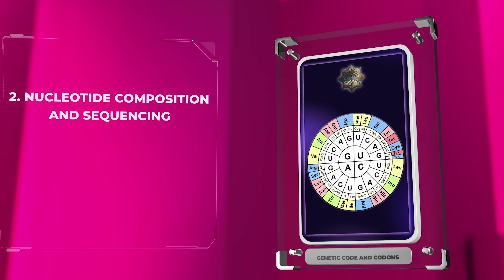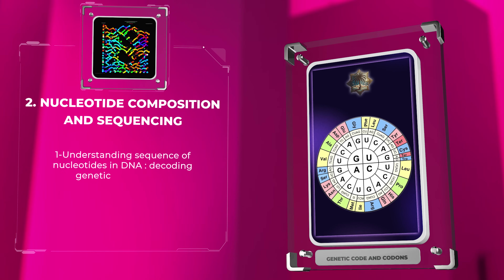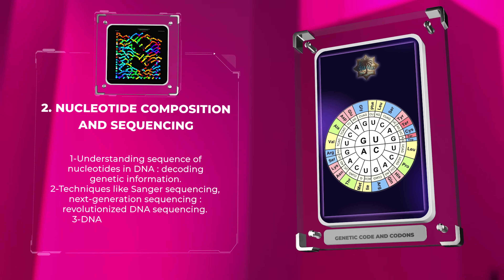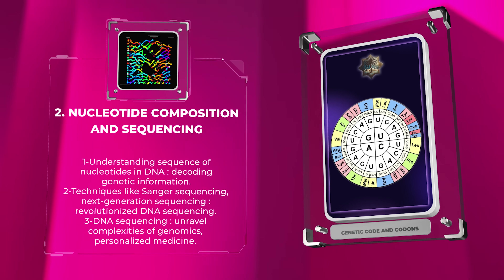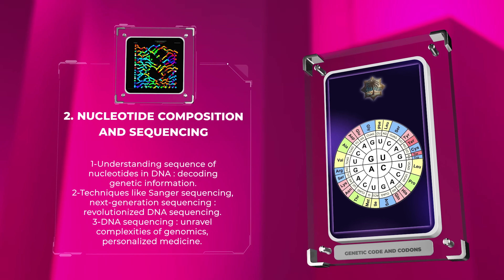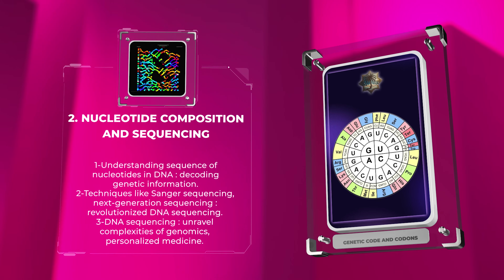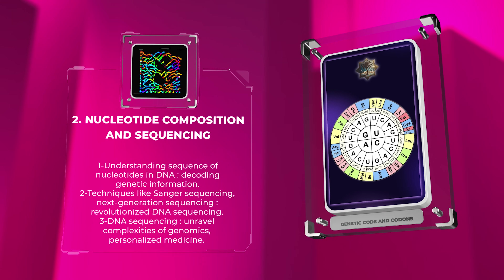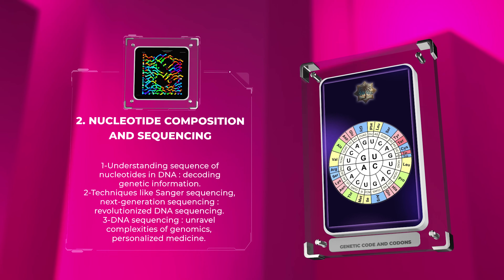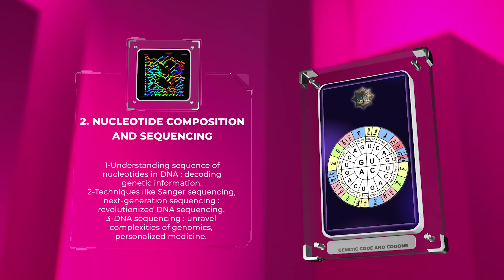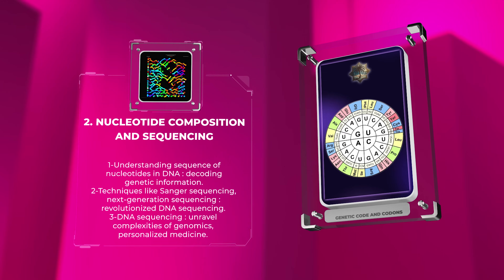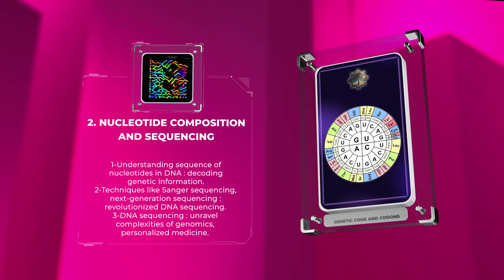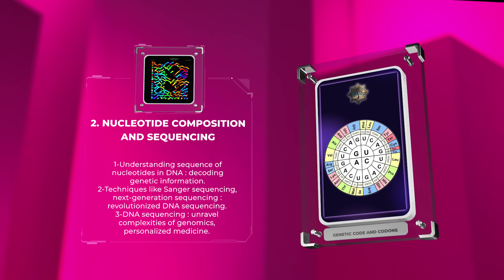Understanding the sequence of nucleotides in DNA is crucial for decoding genetic information. Techniques like Sanger sequencing and next-generation sequencing have revolutionized DNA sequencing, enabling us to unravel the complexities of genomics and personalized medicine.